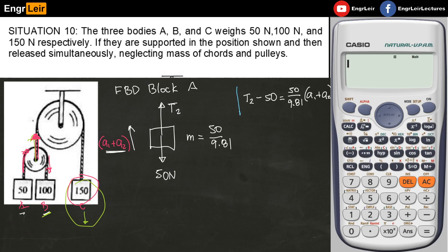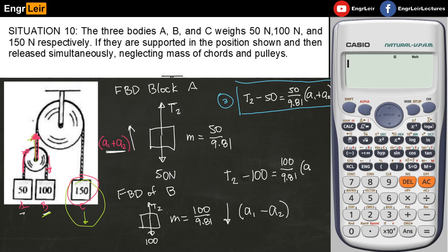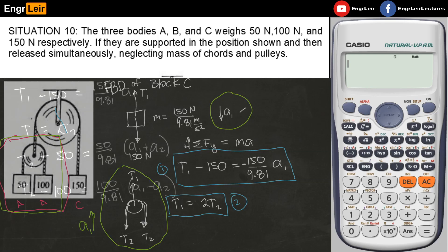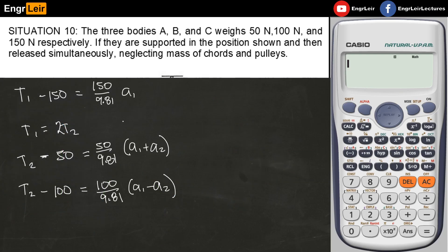This is the free body diagram of block A. Summing forces vertical, you get T2 - 50 = (50/9.81) × (A1 + A2). This is equation 3. Similarly, for block B's free body diagram, when you sum forces vertical you get T2 - 100 = (100/9.81) × (A1 - A2). Since I assumed A1 is downward here, this should be negative. So we now have 4 equations for 4 unknowns.